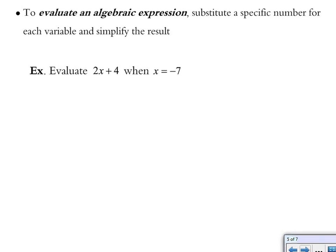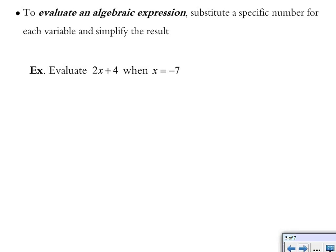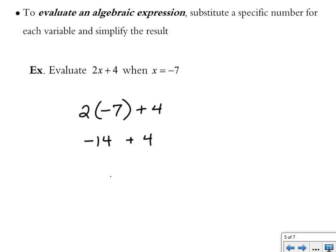This will come in handy when evaluating algebraic expressions. To evaluate an algebraic expression, you're given an expression with a variable like x or y, a specific number to plug in, and then you simplify the result. For example, evaluate 2x plus 4 when x equals negative 7. I replace x with negative 7 using parentheses so I can see the operation is 2 multiplied by x. 2 times negative 7 is negative 14, then adding 4 gives negative 10 as the fully simplified answer.